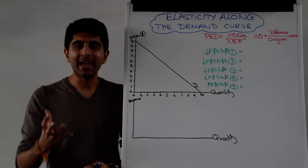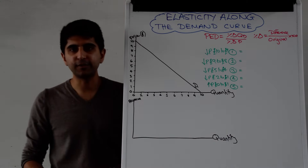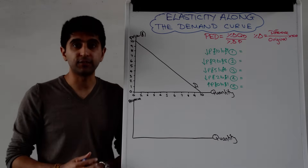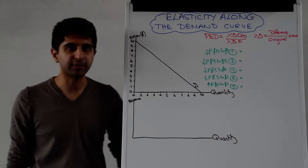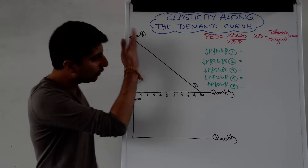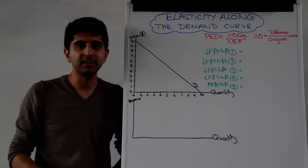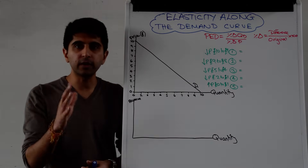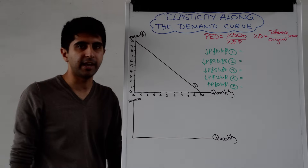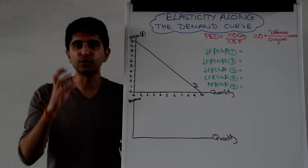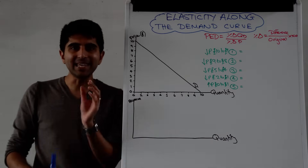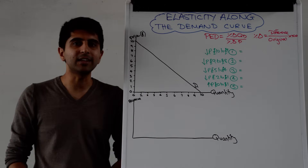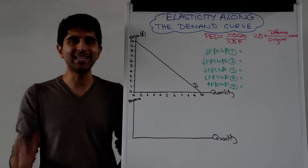Hi everybody. Something that you might be asked to explain in an exam situation is why price elasticity of demand varies along the demand curve. You might look at a demand curve and make the assumption that elasticity is always the same along the curve — that is a wrong, oversimplified assumption. To be hyper-technical, elasticity varies along the demand curve because of the key distinction between the gradient and elasticity.